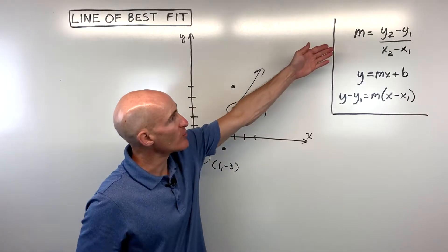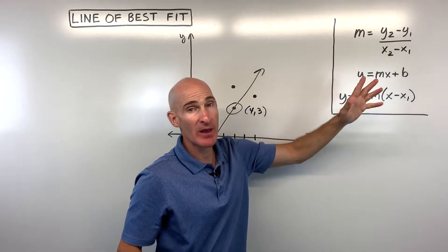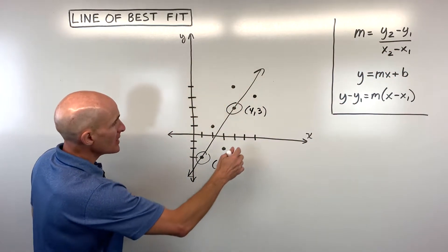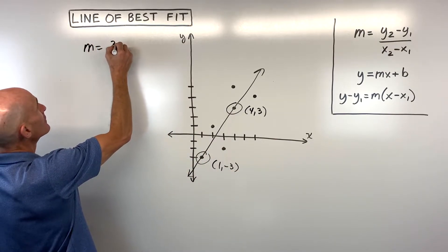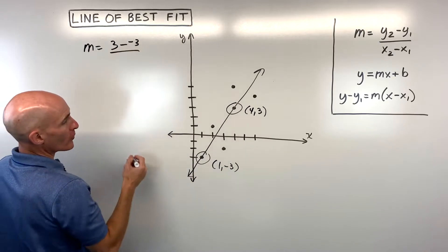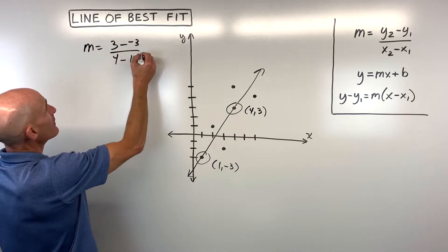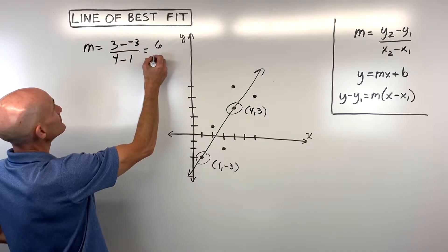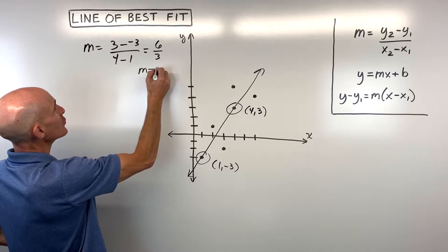So in order to find the slope, remember your slope formula, you subtract the y's over the difference in the x's, paying attention that the order is important. So if I do three minus negative three over four minus one, that's giving me six over three, which is a slope of two.